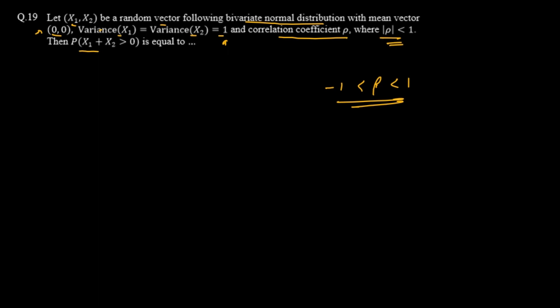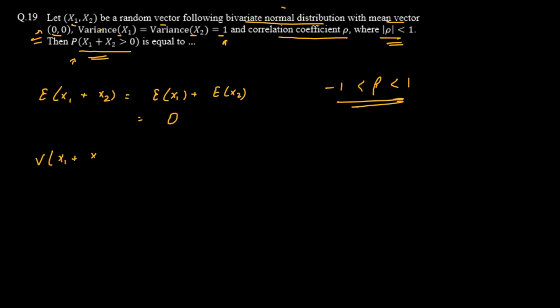We need to find the probability that x₁ + x₂ > 0. First, let's find the expectation of x₁ + x₂. Since these follow a bivariate normal, E(x₁ + x₂) = E(x₁) + E(x₂). The mean vector is (0, 0), so both expectations are 0, giving us E(x₁ + x₂) = 0.